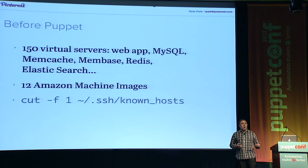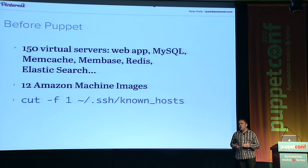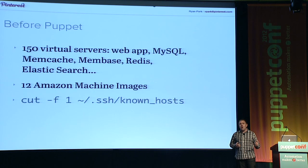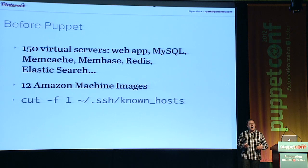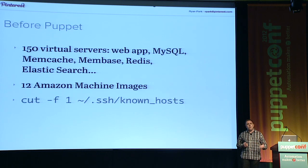We had no real list of what was running in our architecture. We'd actually have to look at the known hosts file, see what servers people had SSH'd to over the last few weeks or months, and hope that was a somewhat authoritative list of what servers we had. When I got to Pinterest as the first person dealing with technical operations as my main focus, bringing in Puppet and Puppet Dashboard were really critical to standardizing everything.